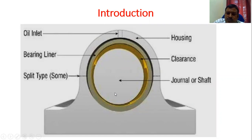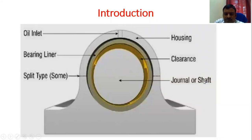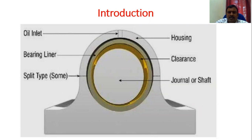They are designed such that the journal has a smaller diameter compared to the housing or bearing. This clearance between the journal and the bearing is usually filled with lubricating oil. The function of this oil is to reduce or eliminate contact between the journal and the bearing, so the rubbing action is eliminated and friction reduces considerably.